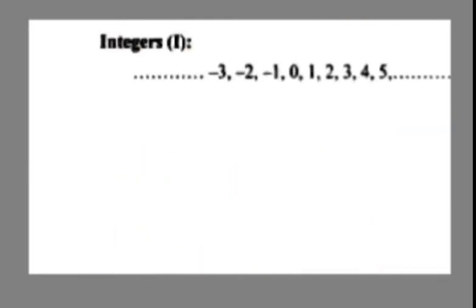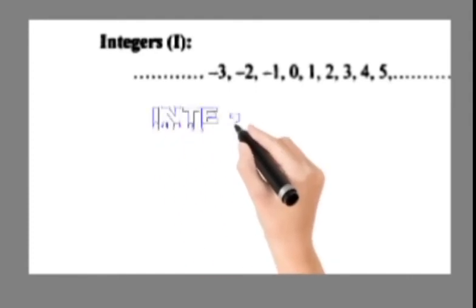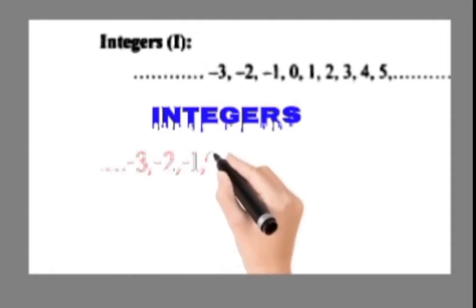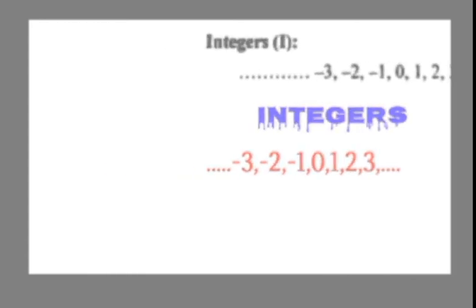Integers. In integers we have negative numbers, positive numbers, and 0. So integers include natural numbers, whole numbers, and negative numbers.